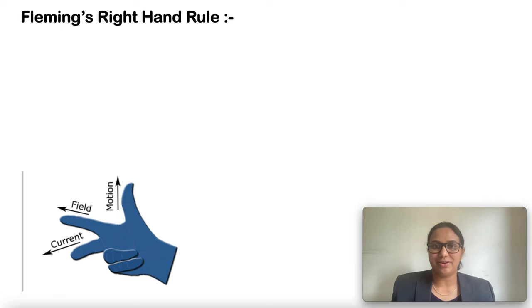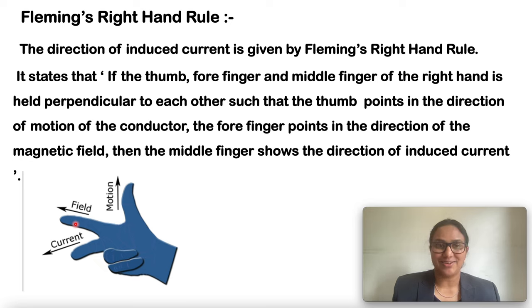What is Fleming's right hand rule? If the thumb, forefinger, and middle finger of your right hand are held mutually perpendicular to each other such that the thumb points the direction of motion of the conductor, the forefinger represents the direction of magnetic field, and the middle finger represents the direction of current. The direction of induced current is given by Fleming's right hand rule.